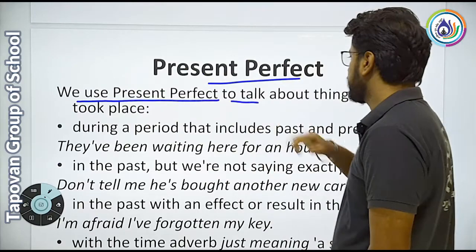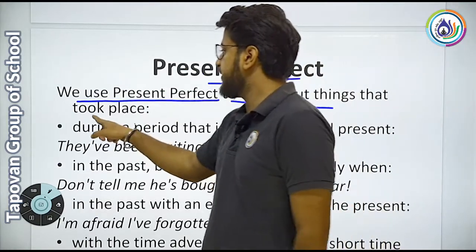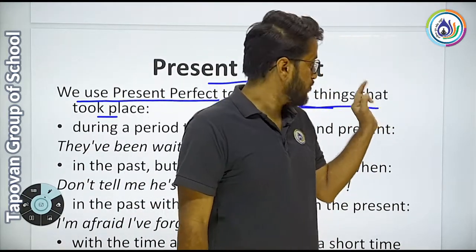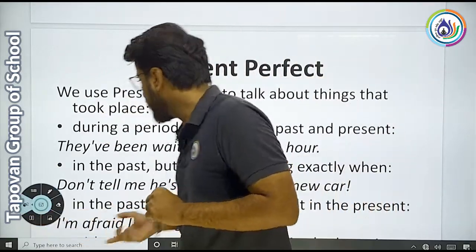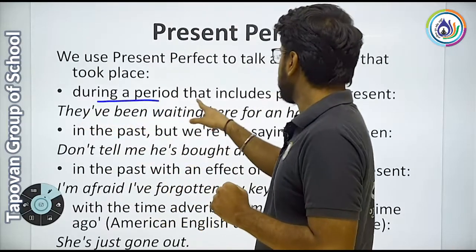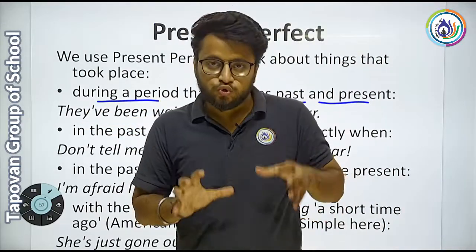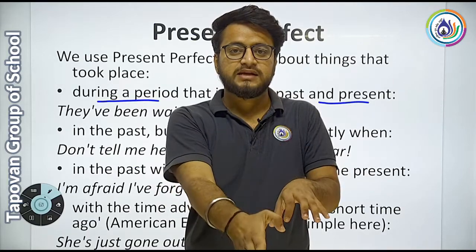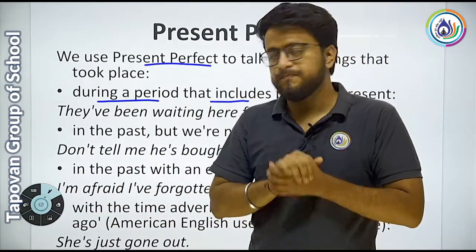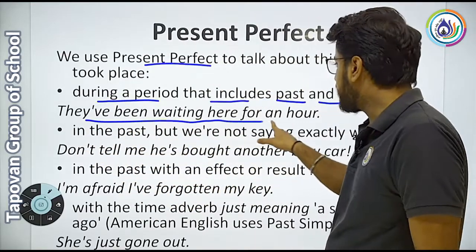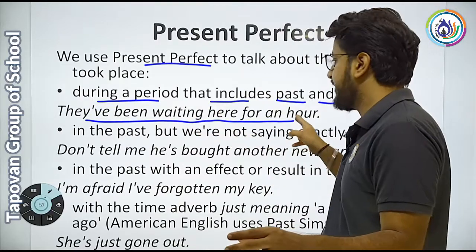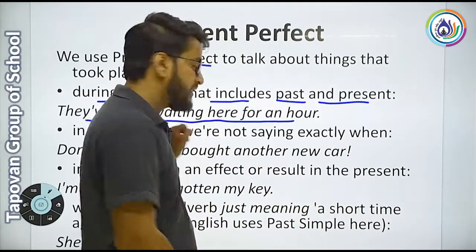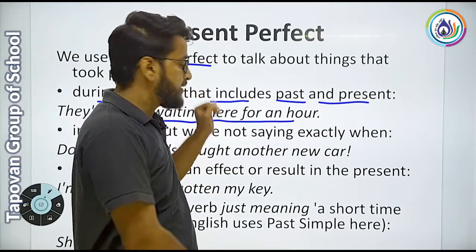We use present perfect to talk about things that took place. हम present perfect use करते हैं बात करने के लिए ऐसी चीज़ों को जो place बनाती हैं. Point number one: during a period that includes past and present. जो चीज़े past में भी included हैं और present में भी included हैं, इन दोनों को merge करके जब हमें कोई sentence बनाना है, तो हम present perfect का use करते हैं. Example: they have been waiting here for an hour. वो सारे वेट कर रहे हैं उसके लिए एक घंटे से. यहां they have been waiting — मतलब past में एक घंटे पहले भी वेट कर रहे हैं, अब भी वेट किये जा रहे हैं.